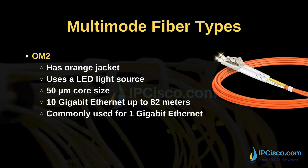OM2 has an orange jacket too. It uses an LED light source. Here there is a smaller core — the size of the core is 50 micrometers. It supports 10 gigabit ethernet up to 82 meters. It is commonly used for 1 gigabit ethernet.